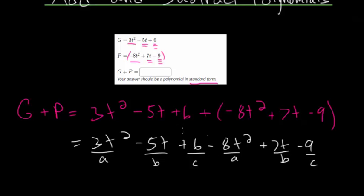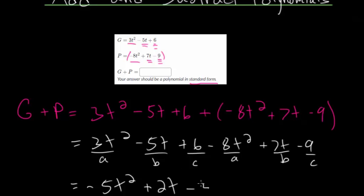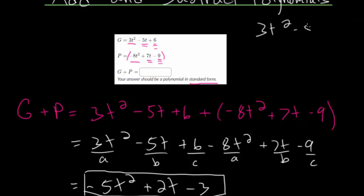As I showed in a previous video, you can also use an underlining method. Either way works, but letters work better, especially when these polynomials get bigger. Combining the A terms first: you've got 3t squared and we're taking away 8 of them, so we'd have negative 5t squared. Then minus 5t plus 7t is just plus 2t. And plus 6 minus 9 would be minus 3. So when you add these polynomials, you get minus 5t squared plus 2t minus 3 as our final answer. There is another method — we could stack them and add straight down, adding by columns.